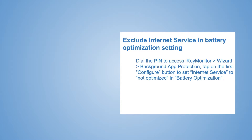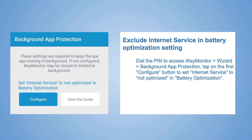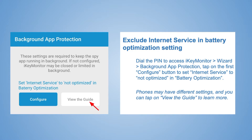Exclude internet service in the battery optimization setting. Dial the PIN to access iKey Monitor, tap on Wizard, find 'Background App Protection,' and tap on the first Configure button to set internet service to 'Not Optimized' in battery optimization. Please note that phones may have different settings — you can always tap on 'View the Guide' to learn more.